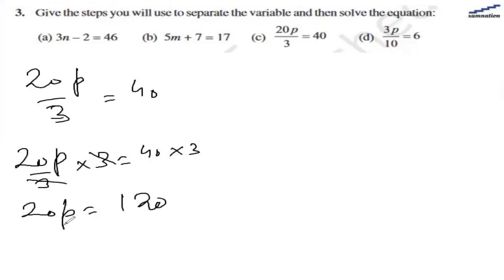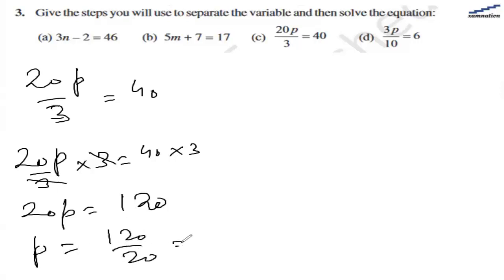Now we are going to divide both sides by 20. On the left hand side we have p, and on the right hand side we have 120 divided by 20 which is 6. So p equals 6 is the solution for part (c).